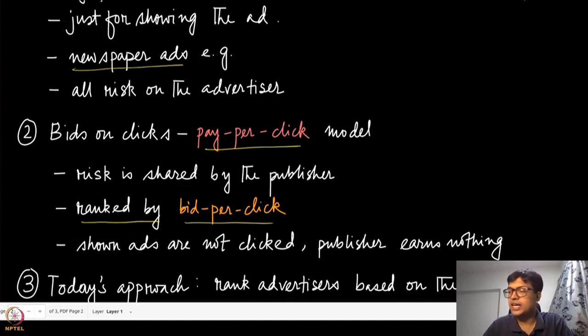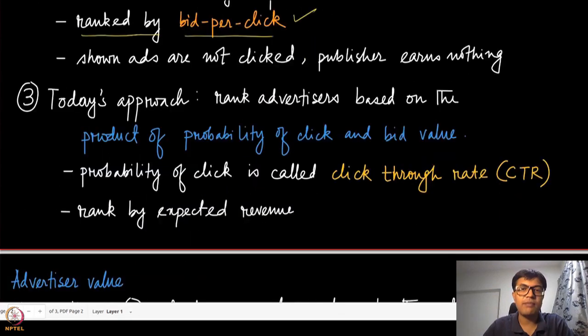The earlier versions of pay-per-click auctions ranked them by bid per click. But the problem is that some advertisers can bid very high to certain pages where it's not actually relevant, showing irrelevant ads with very low probability of getting a click. The publisher earns nothing because those ads are never clicked. The modern approach ranks advertisers based on the product of the probability of click and their bid value, not just by their bid value.